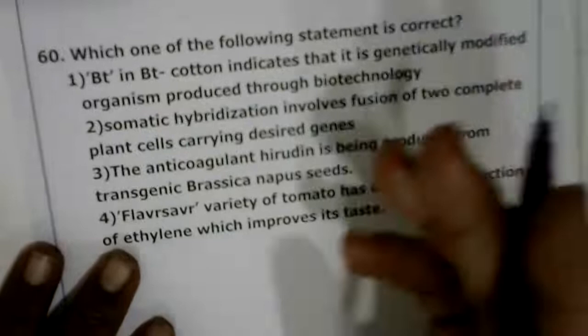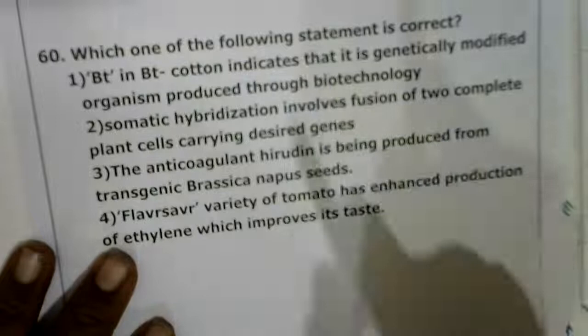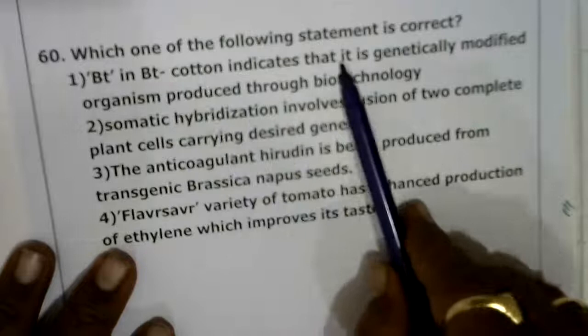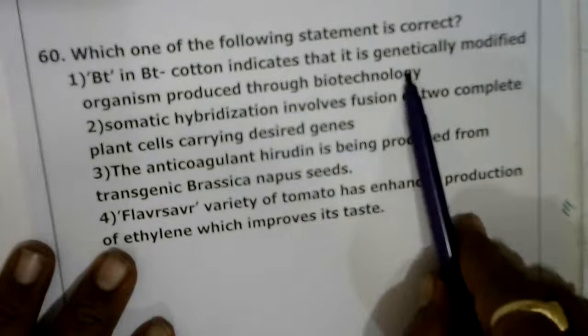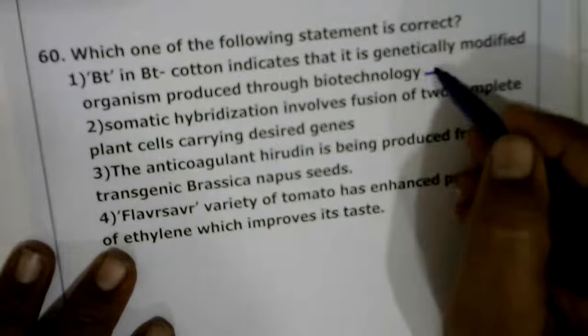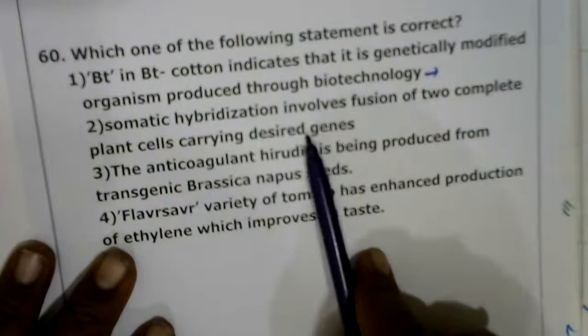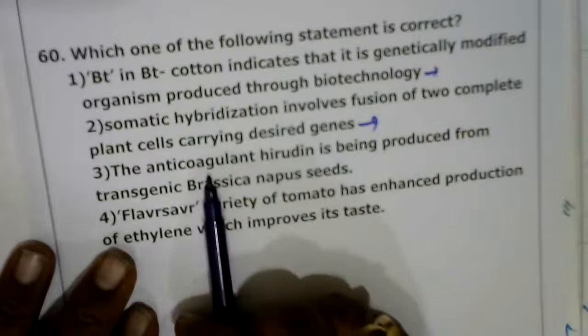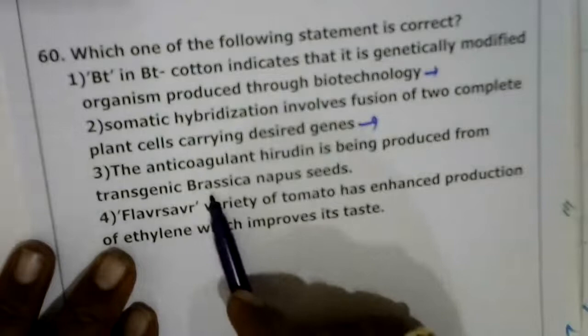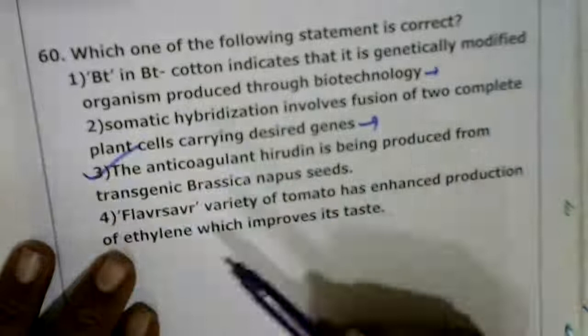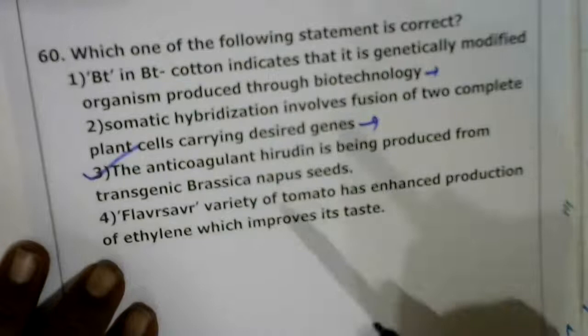Next: which statement is correct? Bt in Bt cotton indicates it is a genetically modified organism produced through biotechnology — it is produced through genetic engineering. Somatic hybridization involves fusion of two complete plant cells carrying desired genes — this is tissue culture. The anticoagulant hirudin is being produced from transgenic Brassica napus seeds — this is the correct statement. Flavor Savor variety of tomato has enhanced production of ethylene — this is wrong. The correct answer is the third statement about hirudin from transgenic Brassica napus.